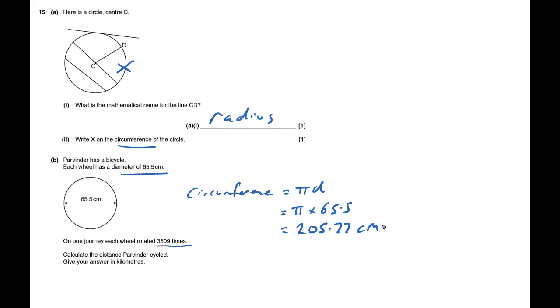That's each time it goes round, that's how far it goes. I'm going to change that into meters because it says give my answer in kilometers, and I don't want to work in centimeters. So that's 2.0577 meters.